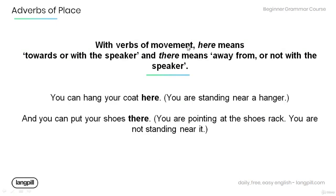With verbs of movement, 'here' means towards or with the speaker, and 'there' means away from or not with the speaker. Have a look at the examples below. 'You can hang your coat here' — the adverb of place 'here' tells us that you are standing near the hanger. And in the sentence 'you can put your shoes there,' the adverb of place 'there' tells us that you are pointing at the shoe rack — you are not standing near it.